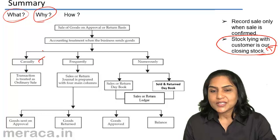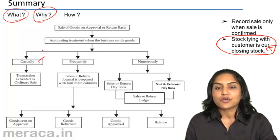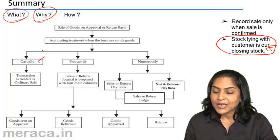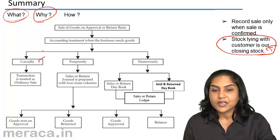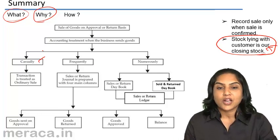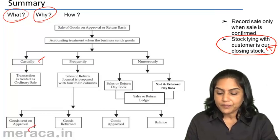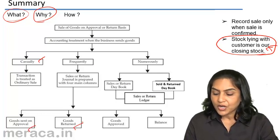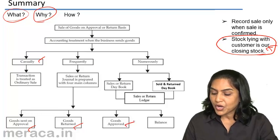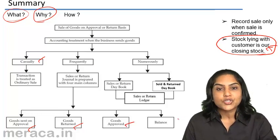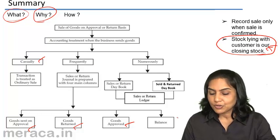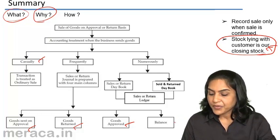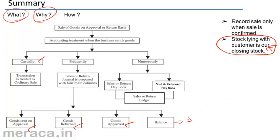When such transactions are more frequent — around five or so in a month — we keep a separate journal: a sale or return journal, which has four columns. A goods sent on approval column, a goods returned column, a goods approved column, and a balance column, which represents goods sent on approval less goods returned less goods approved. This balance represents the stock lying with the customer at selling price.